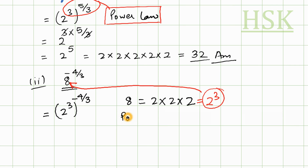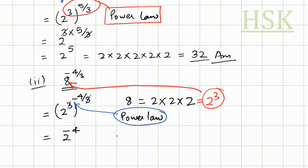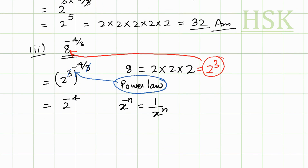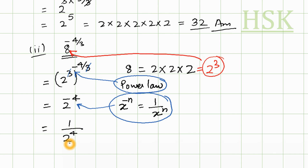Again I'm going to apply the power law — these two powers multiply, and the 3 and 3 cancel out. This gives me 2 to the power of minus 4. Using the result that x to the power of minus n equals 1 upon x to the power of n, I get 1 upon 2 to the power of 4, which equals 1 upon 16.